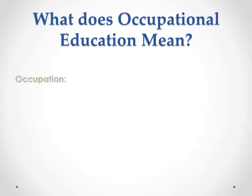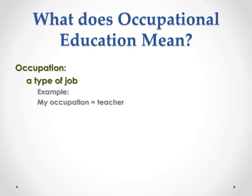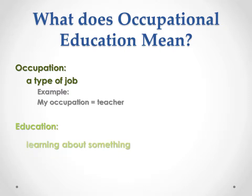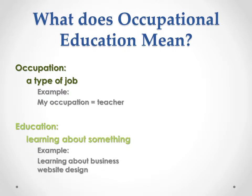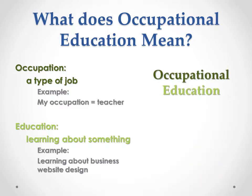Well, occupation means a type of job. For example, my occupation is a teacher. Education means learning about something. For example, learning about business website design. So, Occupational Education means learning about jobs.